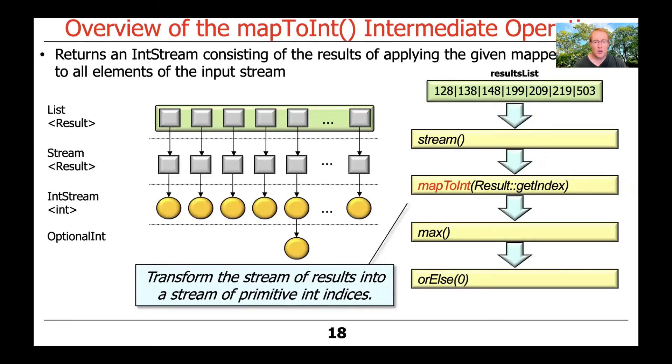The particular way we're going to use it in our program is we're going to use map to transform the stream of results into a stream of primitive indices. Once you run the earlier map operation, you'll end up with essentially a list or a stream of result objects, where each result object keeps track of various pieces of metadata about where a match was found in the input string.